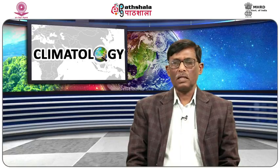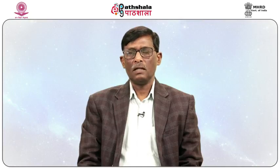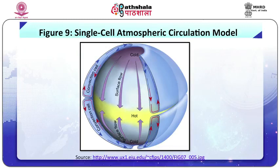Let us discuss planetary atmospheric circulation. At the planetary scale, the atmospheric circulation is divided into two groups: the single-cell atmospheric circulation model and the three-cell atmospheric circulation model. Coming to the single-cell model — the term 'cell' refers to the cycling of air. Here, it is called a single cell because it is operating at global scale but divided at the equator; hence one cell is found in each hemisphere. Its occurrence is now debatable.